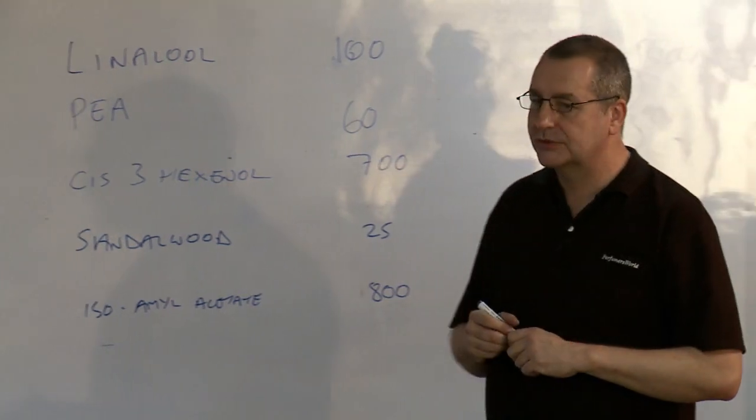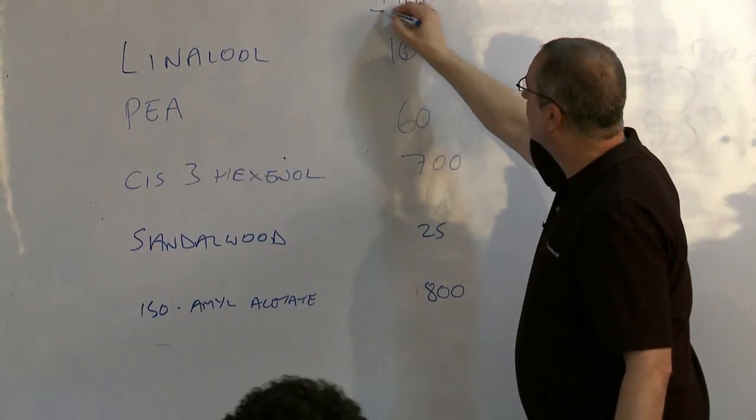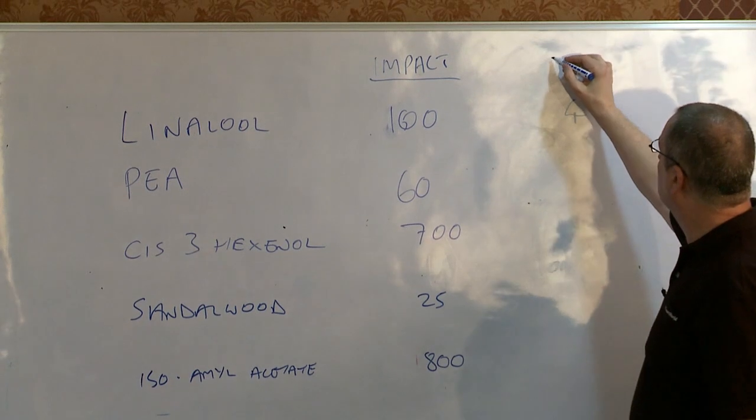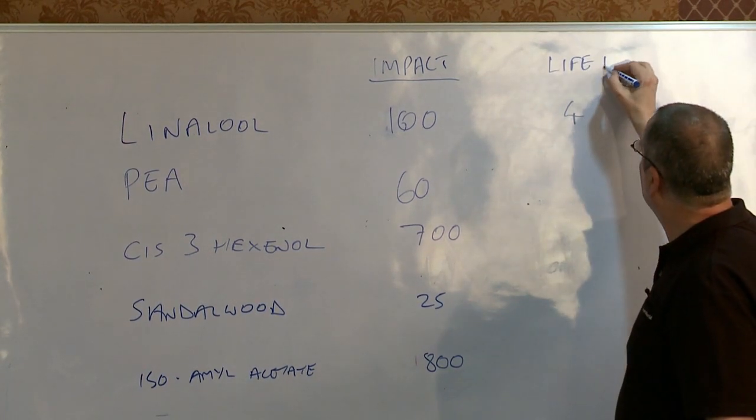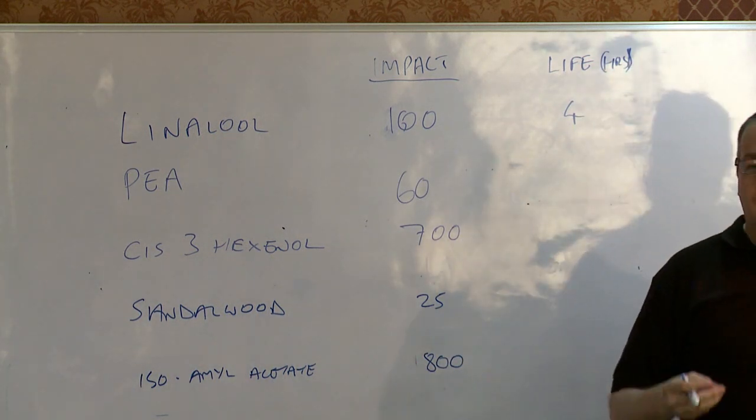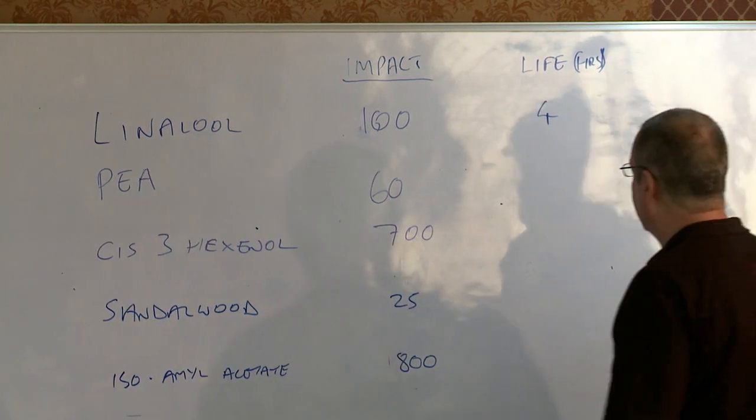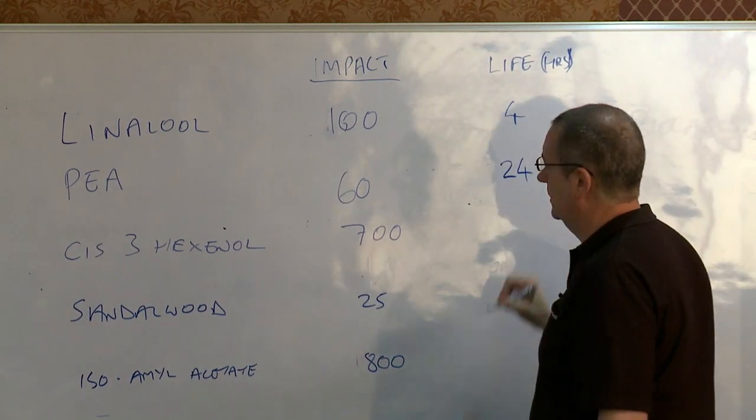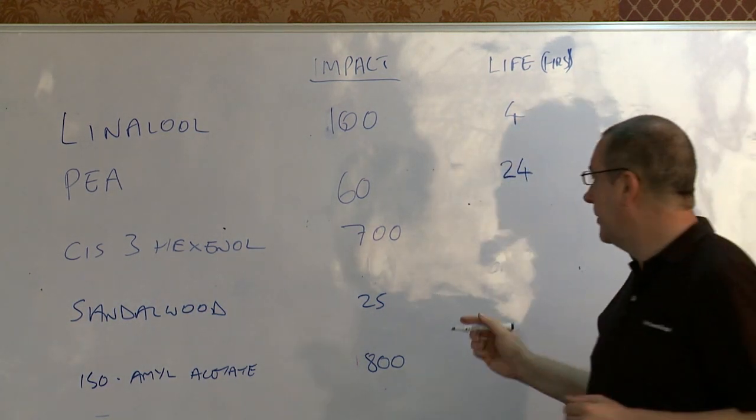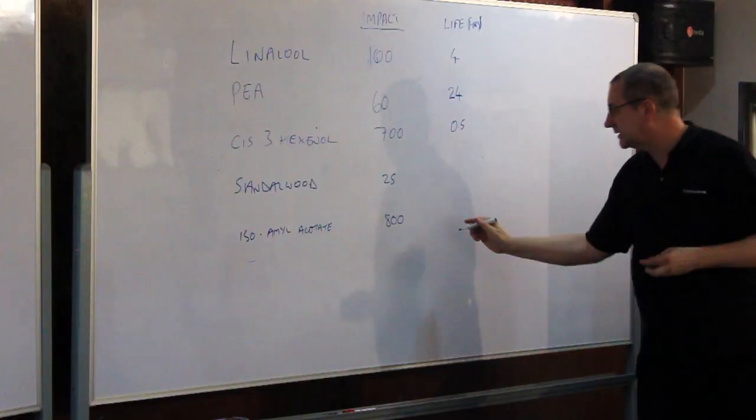So if I give you some more values. So linalool has an impact of 600 but has an odor life of 4 hours. PEA, again, we don't have enough time to sit here and wait for it, but it's about 24 hours. Cis-3-hexanol has a life of about 0.5 hours.